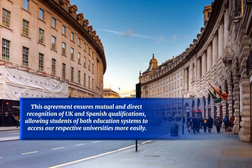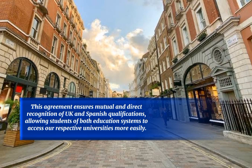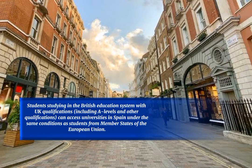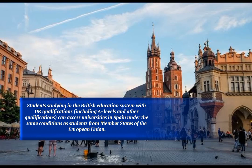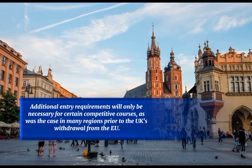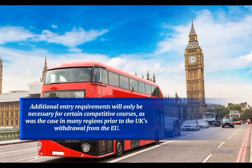This agreement ensures mutual and direct recognition of UK and Spanish qualifications, allowing students of both education systems to access their respective universities more easily. Students studying in the British education system, with UK qualifications including A-levels and other qualifications, can access universities in Spain under the same conditions as students from member states of the European Union. Additional entry requirements will only be necessary for certain competitive courses, as was the case in many regions prior to the UK's withdrawal from the EU.